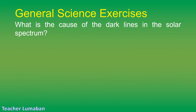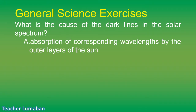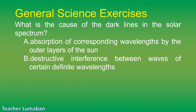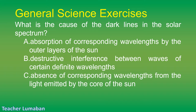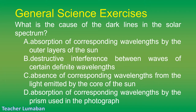What is the cause of the dark lines in the solar spectrum? Letter A: absorption of corresponding wavelengths by the outer layers of the sun. Letter B: destructive interference between waves of certain definite wavelengths. Letter C: absence of corresponding wavelengths from the light emitted by the core of the sun. Letter D: absorption of corresponding wavelengths by the prism used in the photograph.